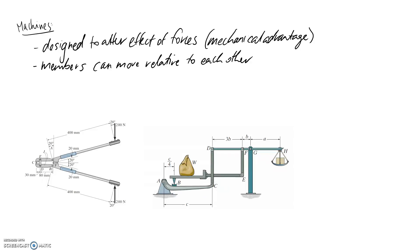Other examples of a machine which would provide mechanical advantage would be like a pulley. We see them a lot. Obviously a pulley, again, alters the effect of the forces.